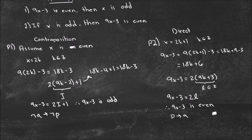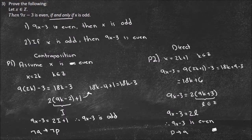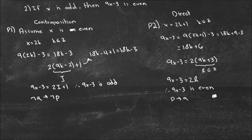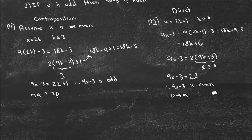And if part 1 and part 2 are both true, the entire proof is true, and the statement '9X minus 3 is even if and only if X is odd' is proven. Hopefully you understand this dual implication with 'if and only if' — it really doubles the work you've got to do, and you've got to be able to recognize that. Thanks for watching, and let me know if you have any questions. Have a good one.